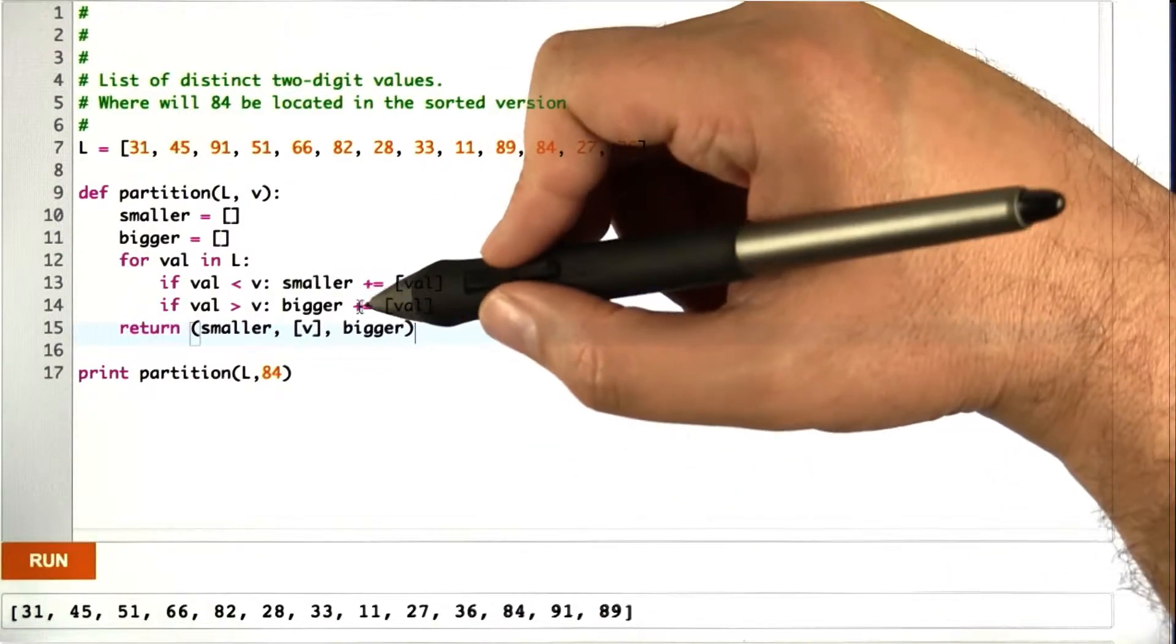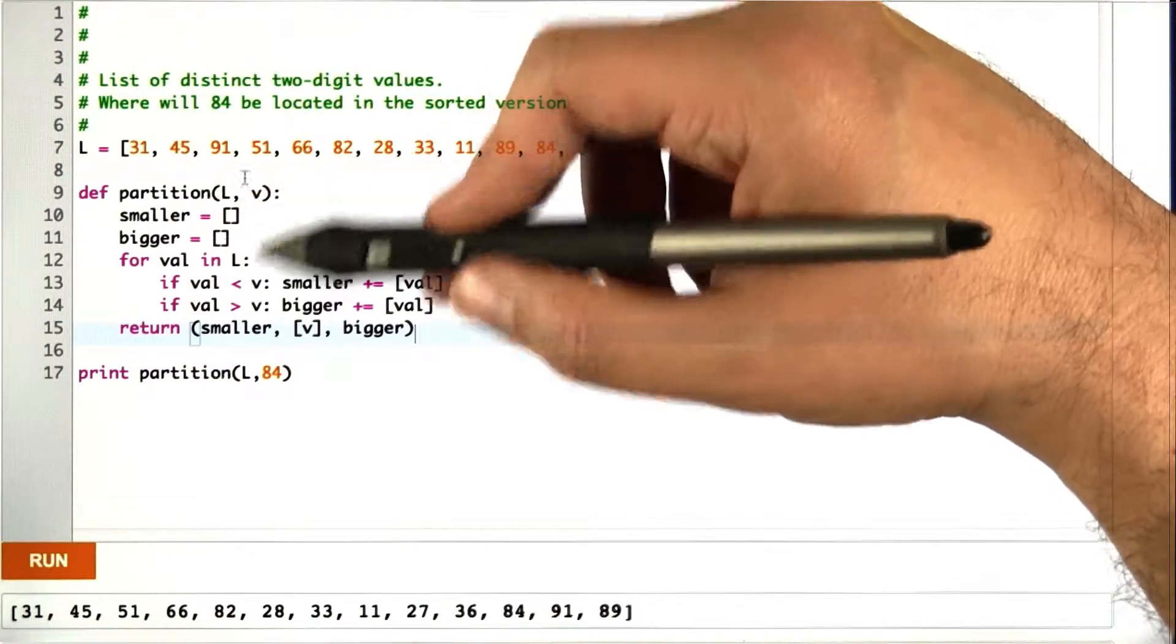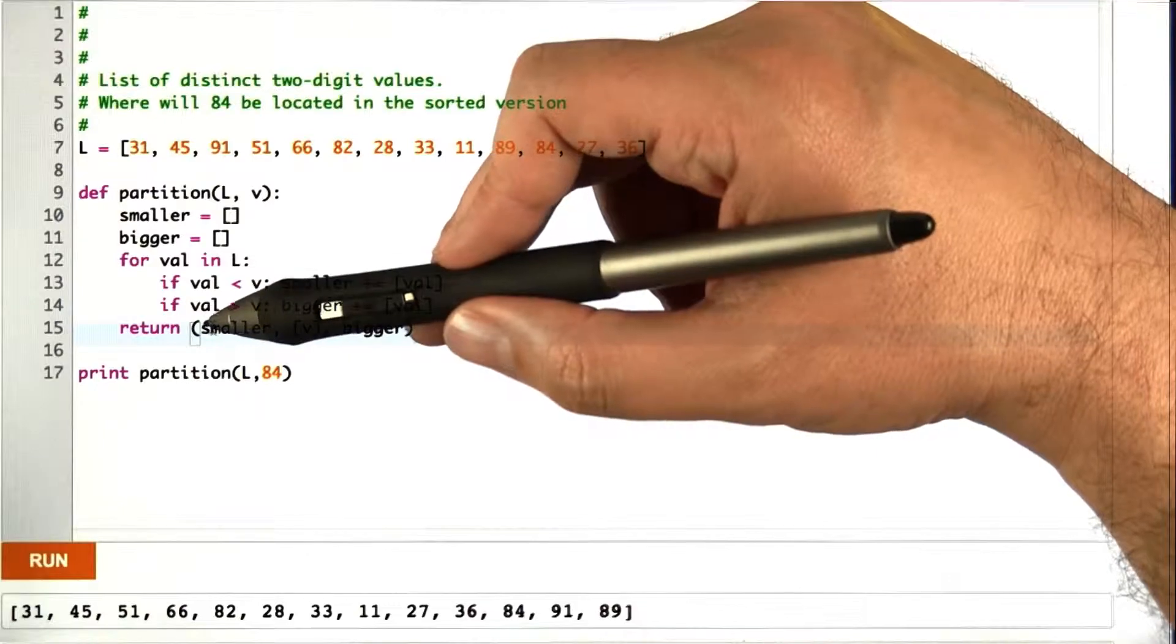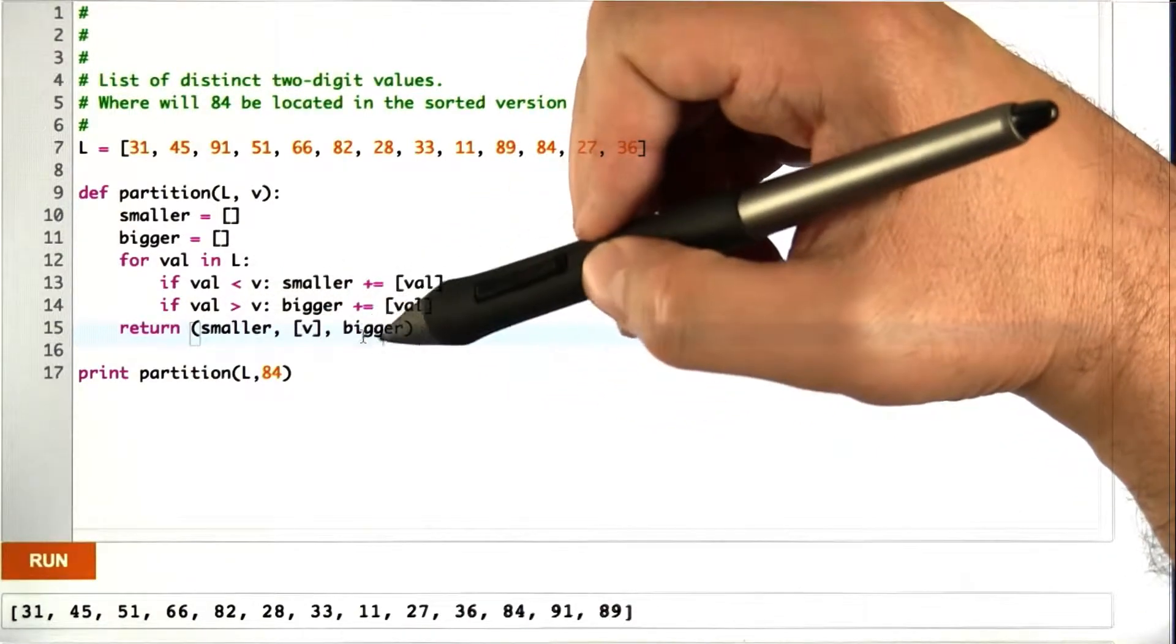To solve this problem, we're going to modify partition a little bit so that instead of actually just building a list for us, it actually separates it out into three chunks: the ones that are smaller than v, the chunk that is v, and the ones that are bigger than v.